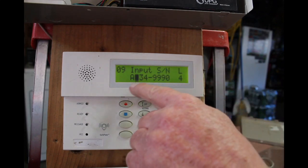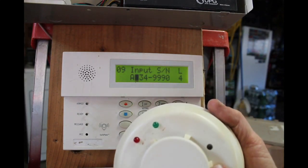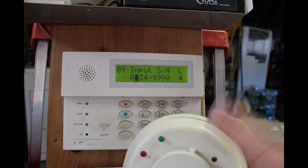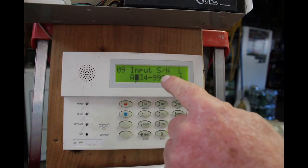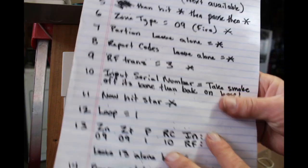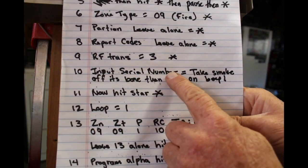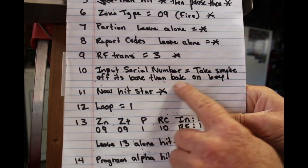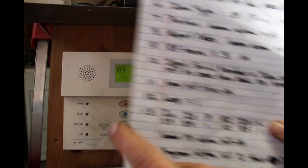All right, it automatically programs the serial number off the smoke detector into the system. All right, let's go to the next one. So all right, it says input serial number, take the smoke detector off the base then back on. Now hit star.